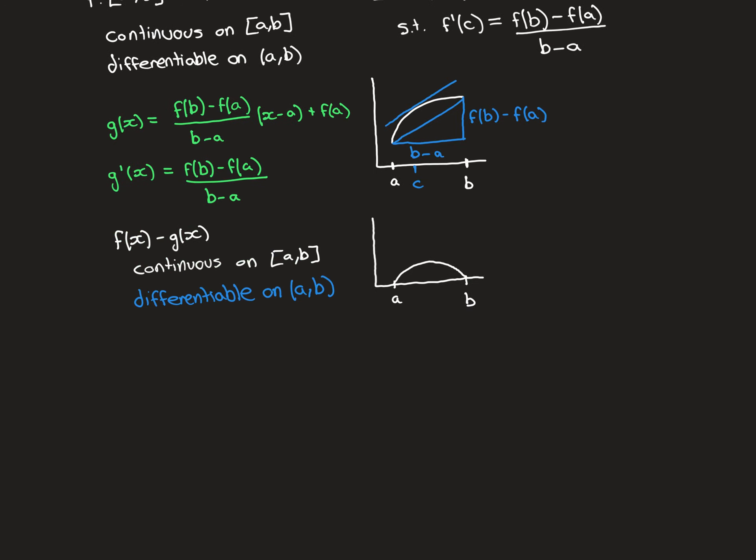For differentiability, we need f(x) minus g(x) to be differentiable everywhere on the open interval (a, b). We know f and g are each differentiable on that interval. We still need to verify that a real-number multiple of a differentiable function is differentiable, and that the sum of two differentiable functions is differentiable. These facts have not yet been shown in the playlist, so we will establish them briefly now.